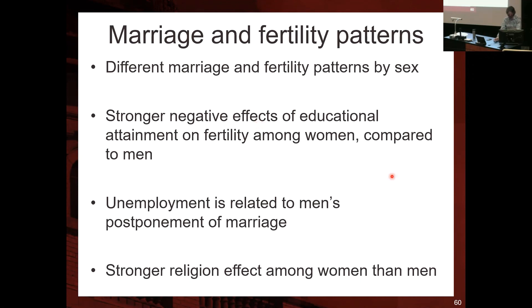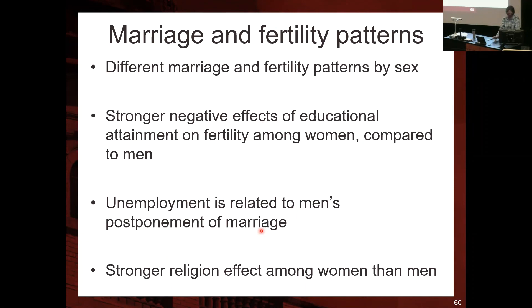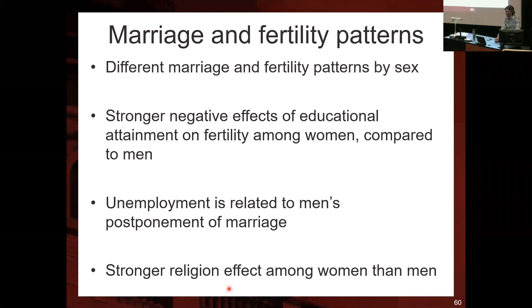Unemployment is related to men's postponement of marriage — unemployed men tend to postpone getting married. There is also a stronger religion effect among women than men: more religious women tend to have more children than non-religious women, and that effect is stronger among women than among men. To emphasize: higher educational attainment will lead women to have fewer children, and that negative effect is stronger among women than among men.